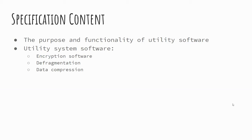Looking at the specification content, we're examining the purpose and functionality of utility software and the three main types. For OCR J277, we're looking at encryption software, defragmentation, and data compression — some of which you'd have heard of and previously looked at earlier in the unit.